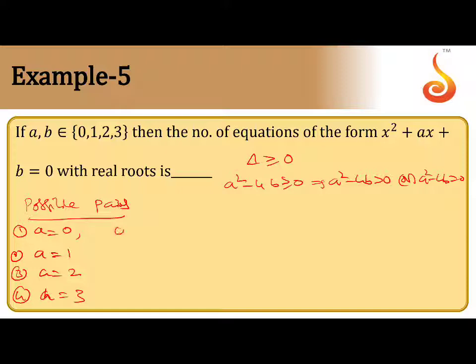b can be 0. So b is 0, 0 - 0 = 0. This case possible. So now a is 1. 1 - 0 is positive. That means b can be 0. We should not take 1. Here b not equal to 1. b is careful, b not equal to 1.